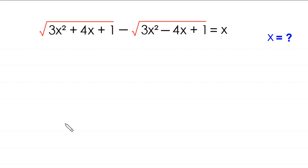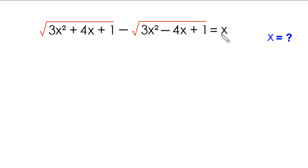Hello everyone, you are welcome to how to solve this very nice radical equation. Square root of 3x squared plus 4x plus 1 minus square root of 3x squared minus 4x plus 1 is equal to x. Our job is to find all possible values of x. So let's start.